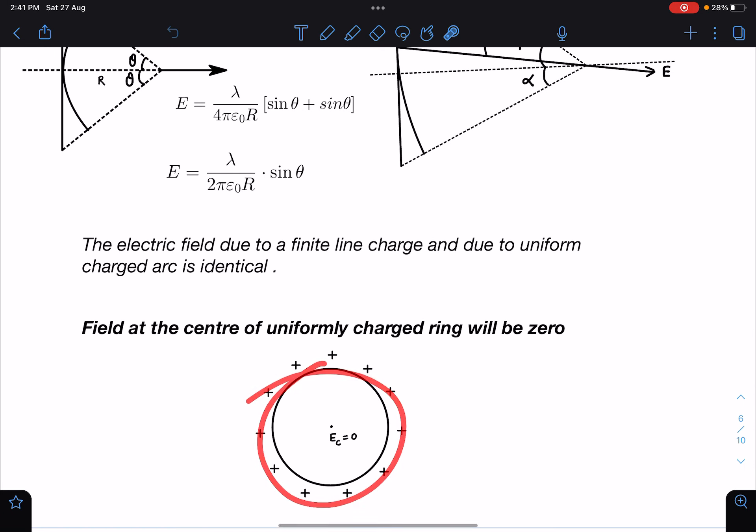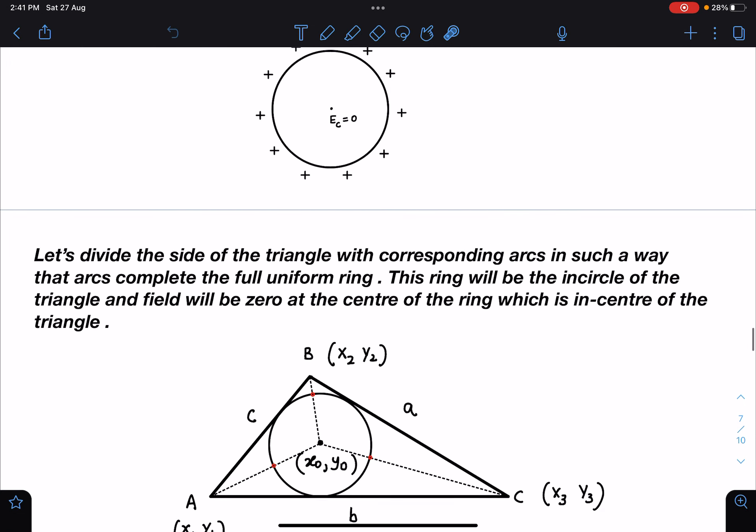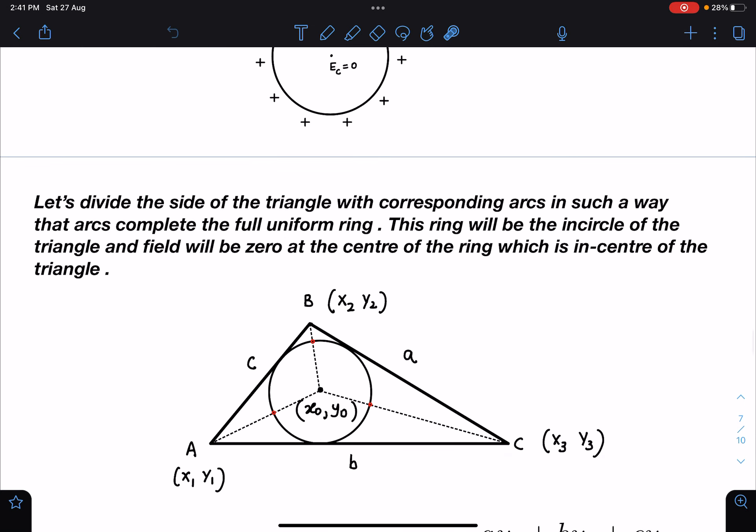And here this result also we know that if there is a uniformly charged ring then electric field will be zero at the center of it. So what we are going to do is we are going to divide this triangle into three different arcs.